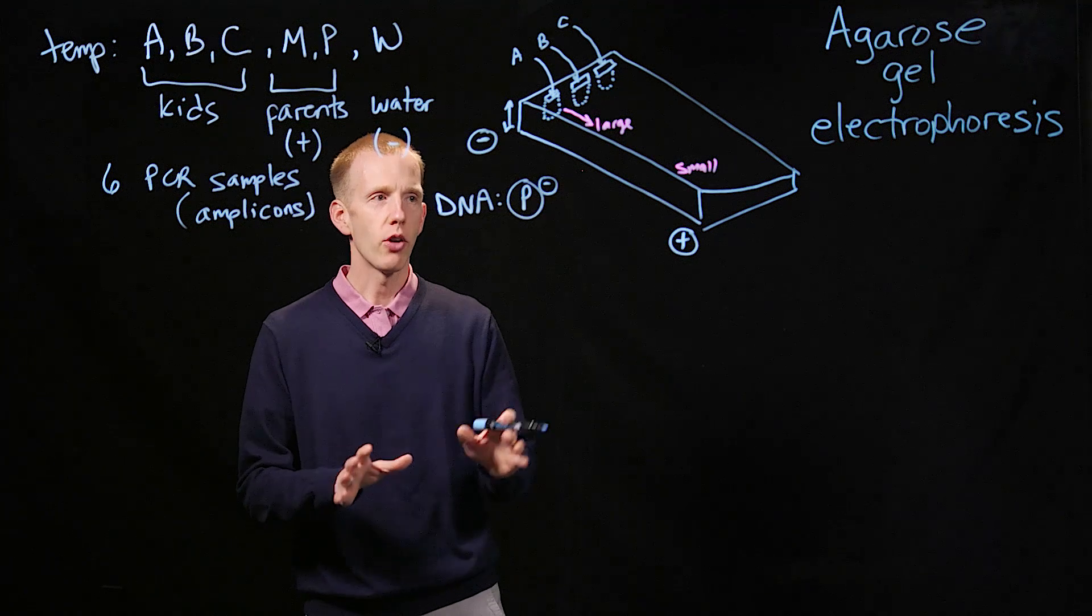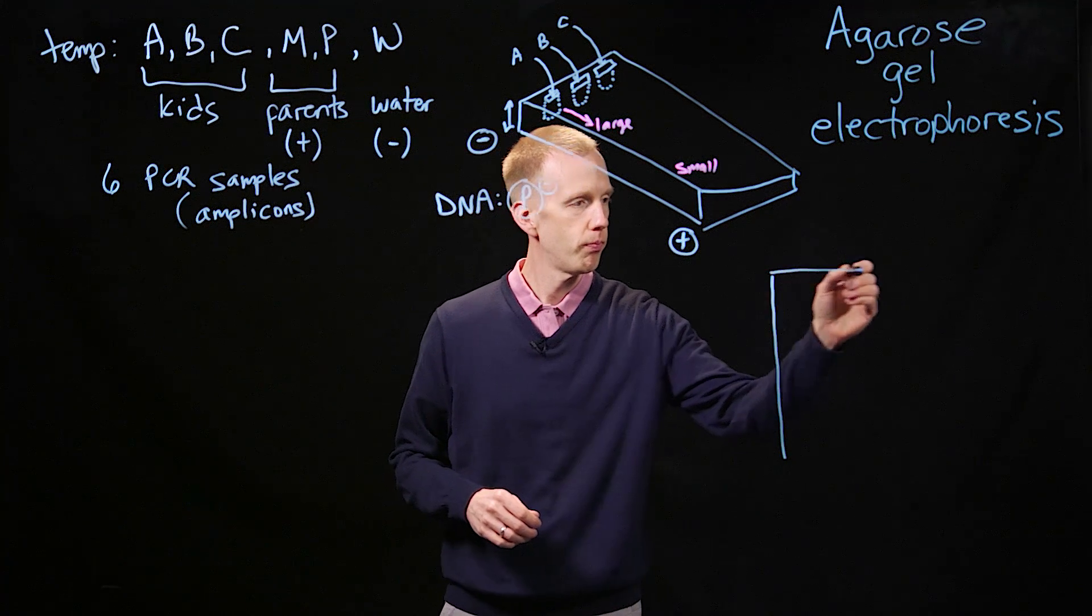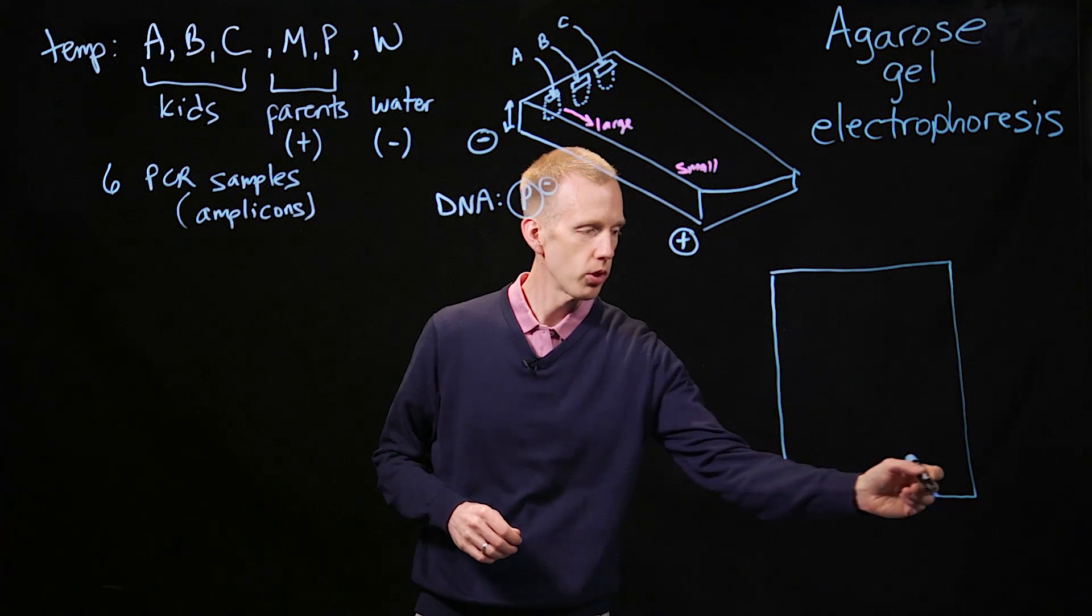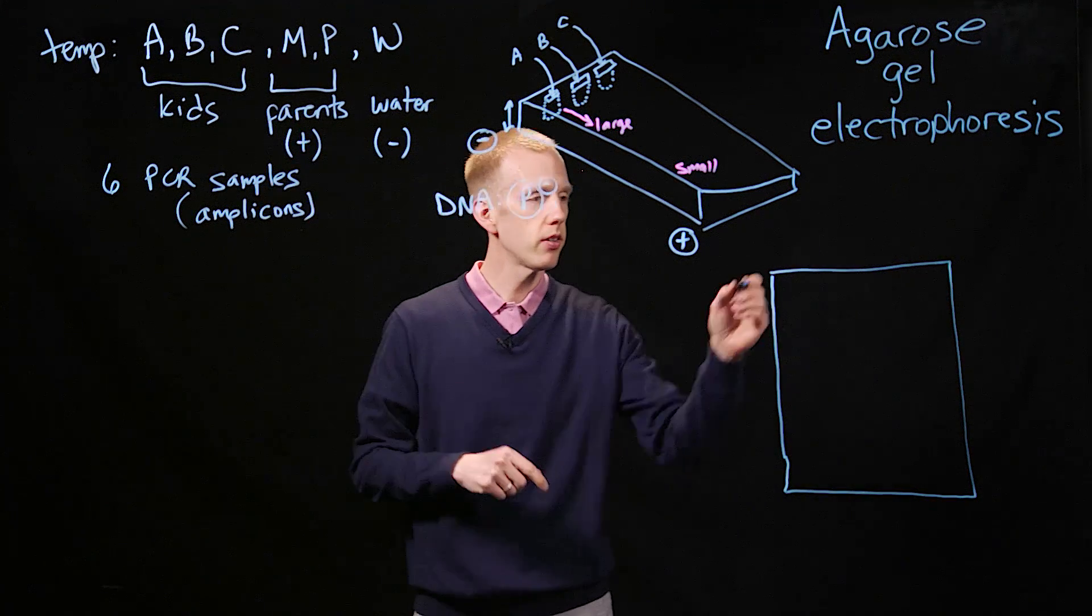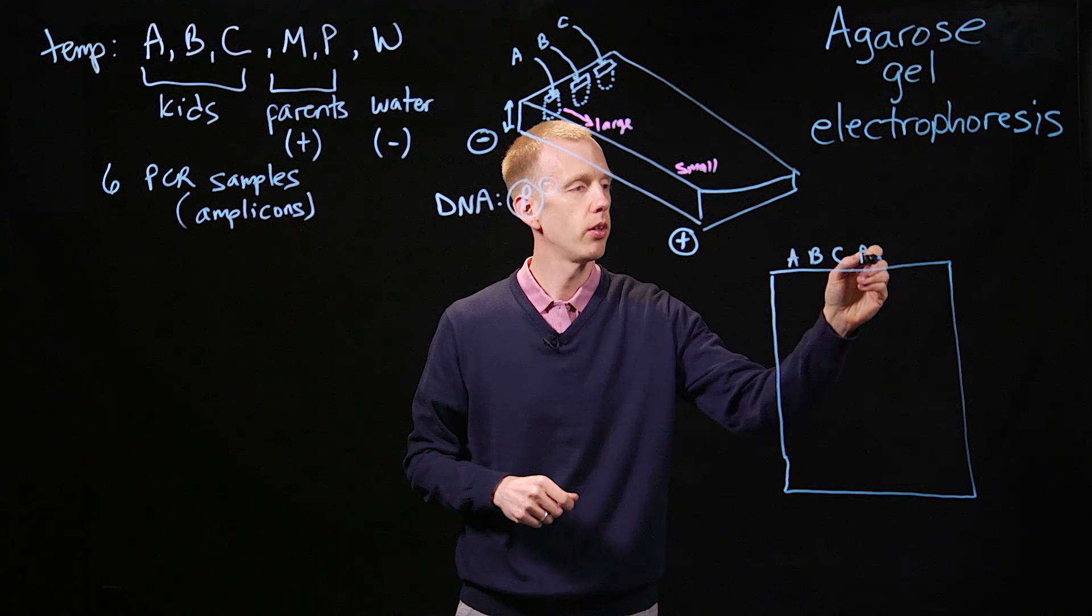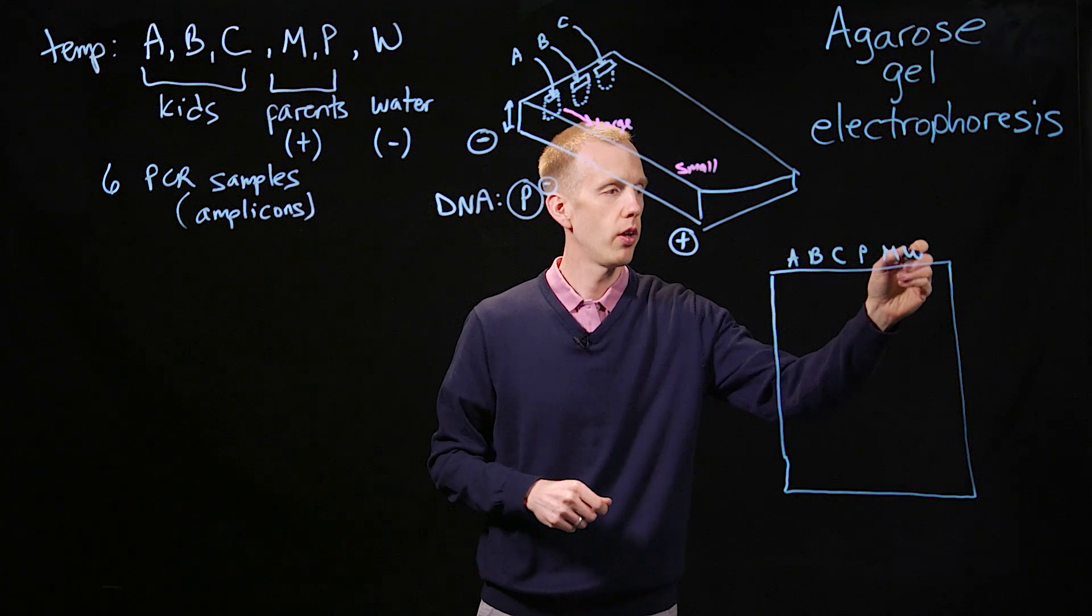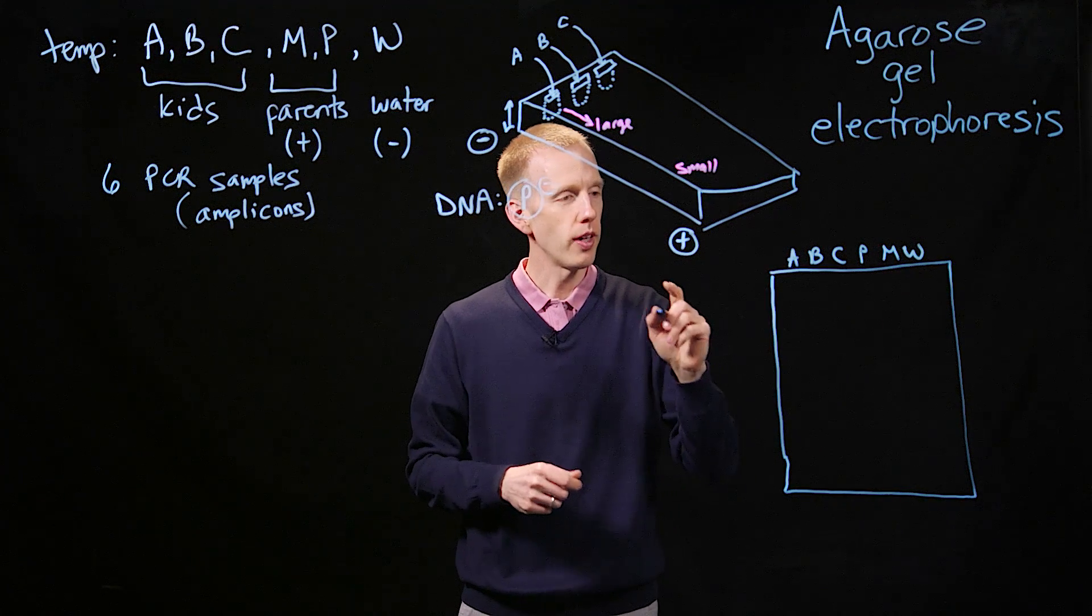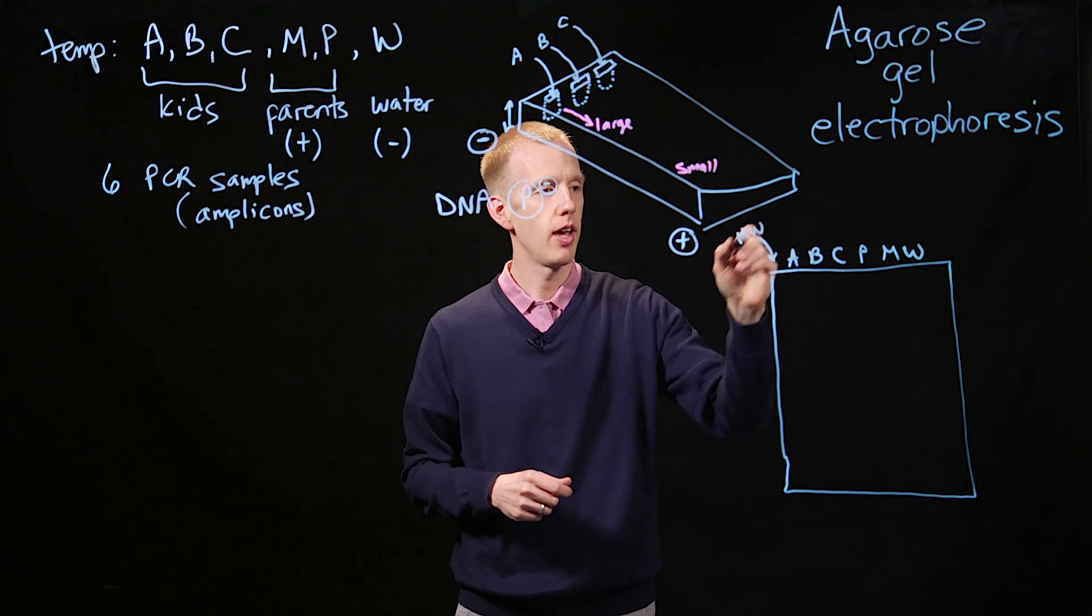So now I'm going to re-diagram this gel like we're looking at it from the top down. Give myself a little bit more space to indicate our different samples. So we have the kids, A, B, and C. We have a paternal sample. We have a maternal sample. We have a water control. And there's one more thing that we have to add to this gel, which I'll describe in a minute. And that's MW. That's not maternal water.